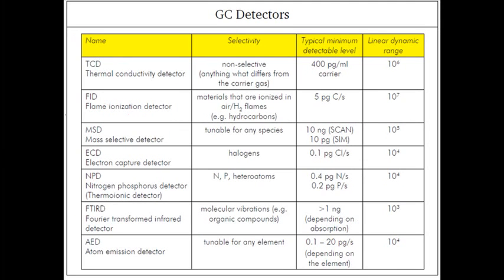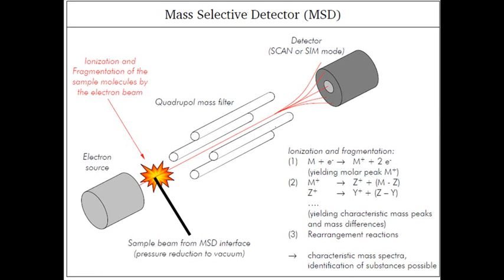We use capillary columns. The detector types we use are the thermal conductivity detector, which is non-selective, and the mass selective detector (MSD), which is tunable for every species. If you have an MSD in your laboratory it is very handy, because you can use it in different types of chromatographic separations. For HPLC you need a UV-visible detector; for GC you need a TCD, but the mass selective detector can be used for different purposes.